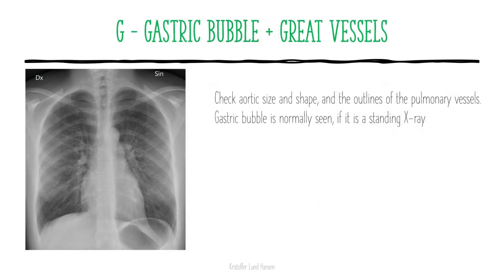G stands for gastric bubble and great vessels. The first thing to do here is check the gastric bubble. The gastric bubble is physiological — it should be there. It's an indicator that we have a standing picture, which is the most optimal. We also want to check the aortic knob and the pulmonary vessels.